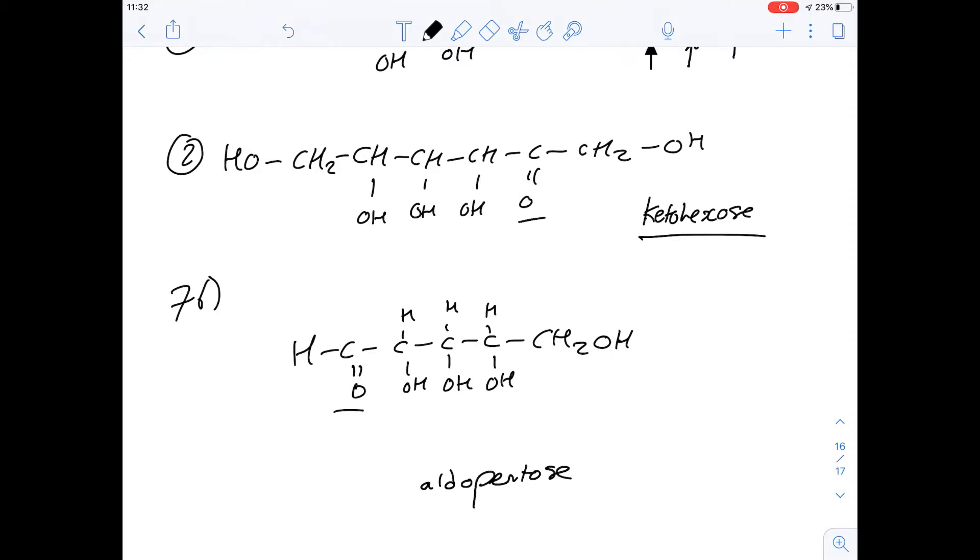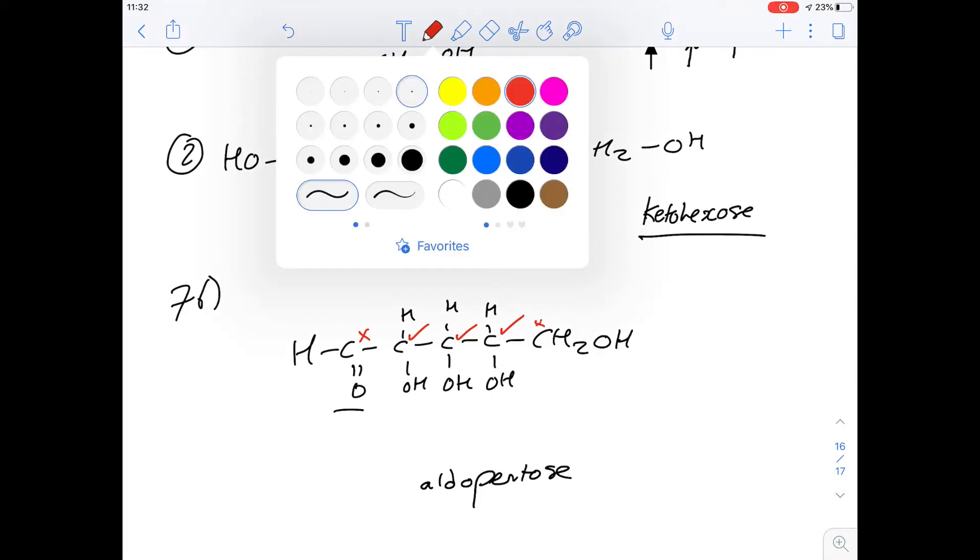And then it asks about stereocenters, so that's going to be a carbon, as we said, with four different groups attached. And I'll change the colour to make this a bit clearer. So we know we've got five carbons here, so let's look at them in turn. Does this one have four different groups attached? No, because it's got this double bond, it's actually only got three groups attached. What about this next one? So it's got a carbon on one side, an OH and H, and then a bit of a longer chain. So this one is a stereocenter, as is this one, as is this one, and then this has two hydrogens, and because two of the groups are the same, this isn't a stereocenter.